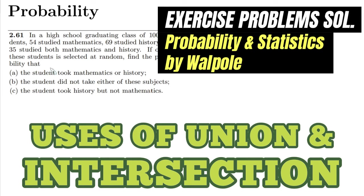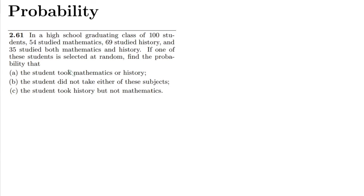Hello guys, I hope all of you will be fine. This is question 2.61. In a high school graduating class of 100 students, 54 students studied mathematics, 69 studied history, and 35 studied both mathematics and history. If one of these students is selected at random, find the probability.